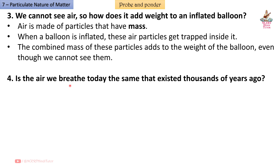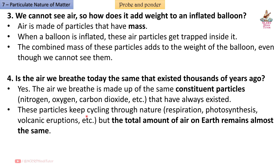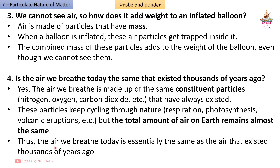Question 4: Is the air we breathe today the same that existed thousands of years ago? Answer: Yes. The air we breathe is made up of the same constituent particles — nitrogen, oxygen, carbon dioxide, etc. — that have always existed. These particles keep cycling through nature: respiration, photosynthesis, volcanic eruptions, etc. But the total amount of air on Earth remains almost the same. Thus, the air we breathe today is essentially the same as the air that existed thousands of years ago.